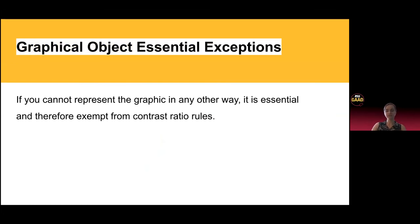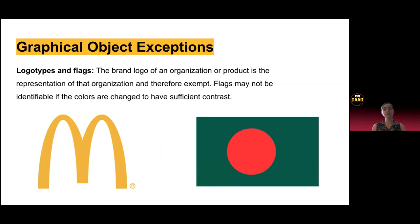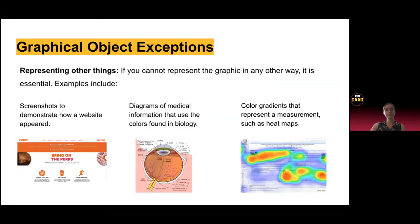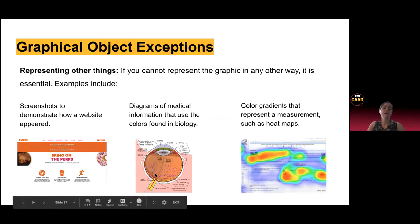Exceptions to this rule: logos and flags — the McDonald's logo and the Bangladesh flag can't be represented any other way, so they don't need to have the 3 to 1 standard. Same thing with photographs and representing other things — screenshots don't need to meet these standards, diagrams of medical information like an illustration of an eye don't need to meet the standard, and color gradients like heat maps don't either.